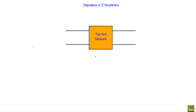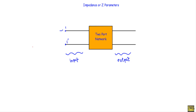This is the schematic of a two-port network. This side of the two-port network is known as input port or port 1. We indicate this terminal as one and this terminal as one prime. We indicate the input voltage of the two-port network by placing plus here and minus here, and V1 is the input voltage.